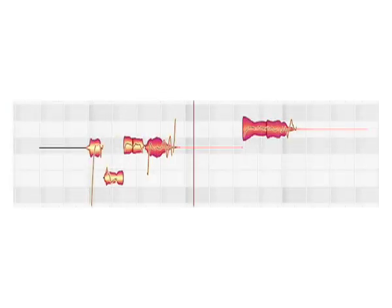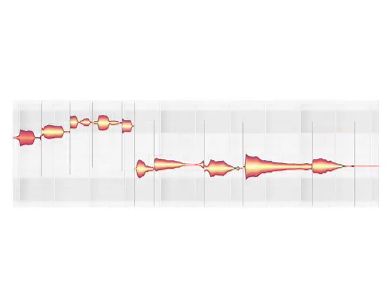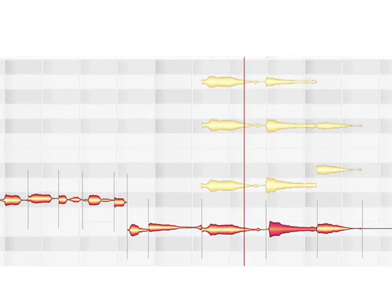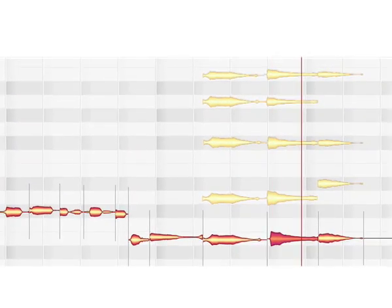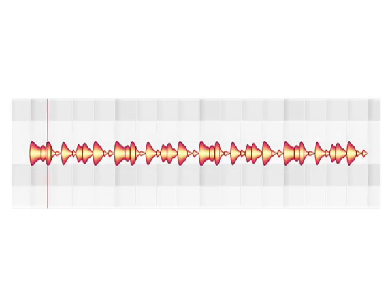For the first time in 2001, Melodyne changed the way of working with audio. Analyzing any recording and showing its musical content as notes that can be easily touched and moved around gave tuning and timing their shapeability — from easy corrections to intensive redesign. While working perfectly on monophonic instruments and vocals, there have been limits when it comes to chords.